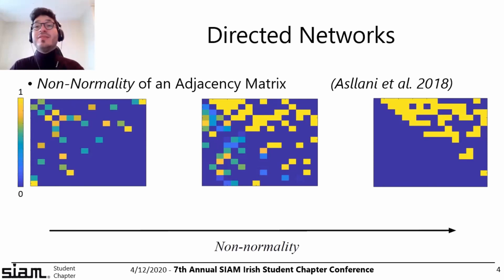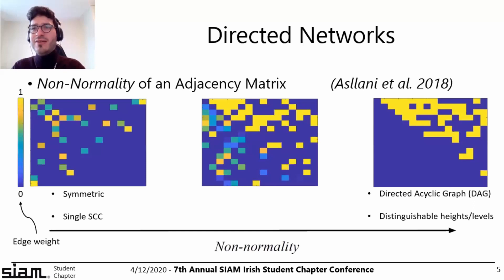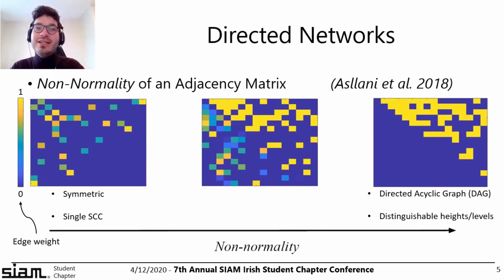We can now think of a spectrum of different adjacency matrices. On one extreme — on my left — we have something which is symmetric, equivalent to the undirected version of the network, usually describing a single strongly connected component. On the other extreme, we talk about the directed acyclic graph (DAG), where all structure lives in just one triangle of the matrix, and we can talk about different hierarchical levels — a complete hierarchy, a directed tree.